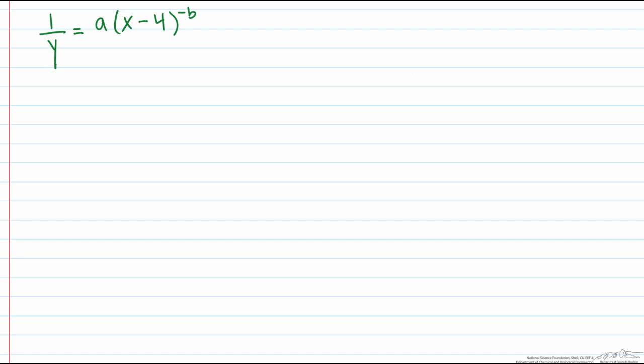So let's look at another one. Here we have 1 over y equals a times x minus 4 to the negative b. The first thing we are going to do is divide both sides by a. Let's get rid of this a right here. And again because we have a negative here I am going to invert this.